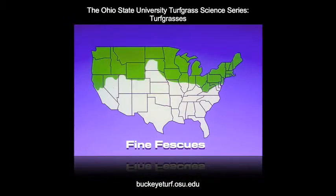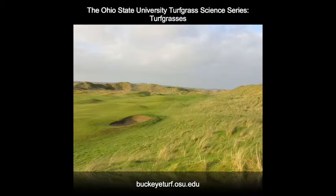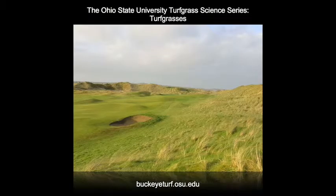Finally, fescues have limited use on golf courses in the United States. They are primarily used in home lawn situations as a shade mix with Kentucky bluegrass, or further north in the United States may be the primary lawn turf. Globally, fine leaf fescues are found on links type golf courses in the United Kingdom, Ireland, and Northern Europe, or courses that have a deep sandy soil profile in a very temperate climate.